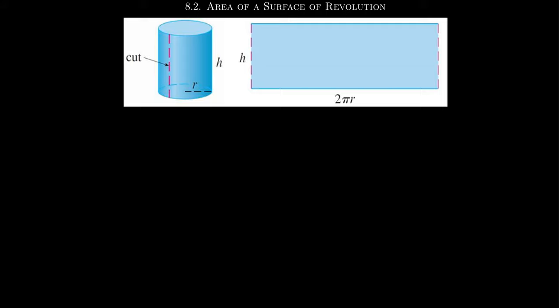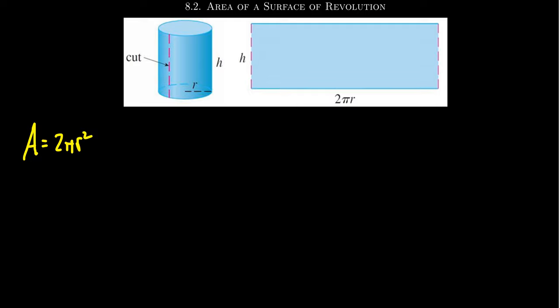We'll start with a couple of examples before getting to the general formula. This diagram, courtesy of James Stewart's calculus textbook, shows a cylinder with radius r and height h. The circle on top has area πr², and there's also a πr² on the bottom, giving us 2πr² for the two circular ends.